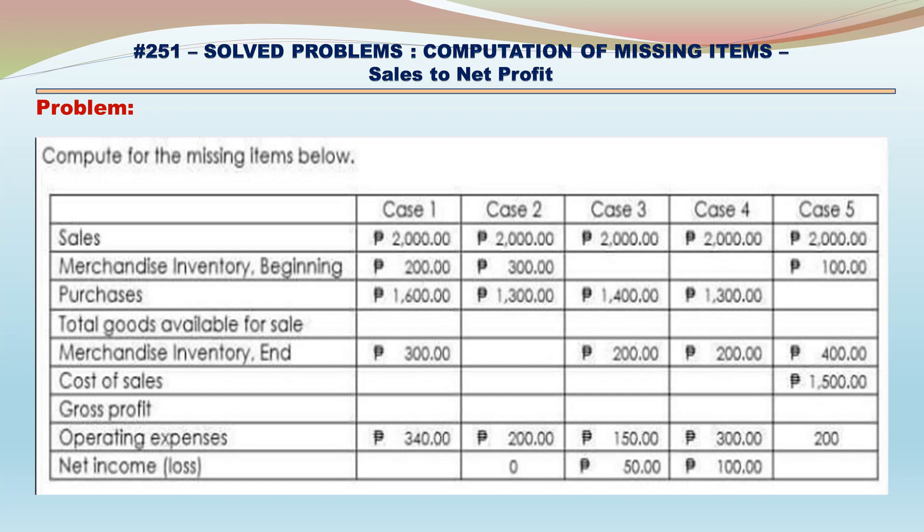Case 1: Sales – 2,000. Merchandise Inventory Beginning – 200. Purchases – 1,600. Total Goods Available for Sale. Merchandise Inventory Ending and Cost of Sales are missing. Gross Profit is also missing.